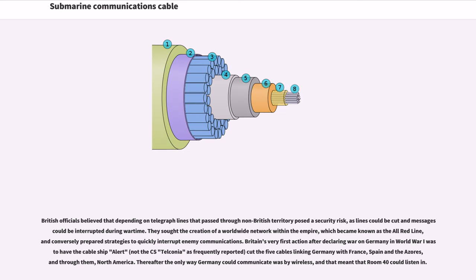British officials believed that depending on telegraph lines that passed through non-British territory posed a security risk, as lines could be cut and messages could be interrupted during wartime. They sought the creation of a worldwide network within the empire, which became known as the All-Red Line, and conversely prepared strategies to quickly interrupt enemy communications. Britain's very first action after declaring war on Germany in World War I was to have the cable ship Alert cut the five cables linking Germany with France, Spain, the Azores, and through them, North America. Thereafter the only way Germany could communicate was by wireless, and that meant that Room 40 could listen in.